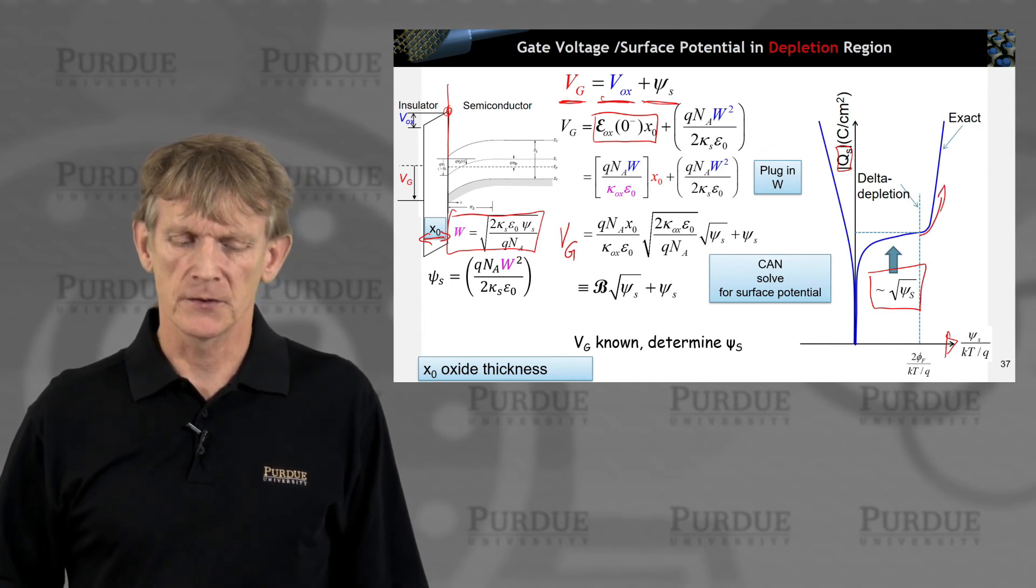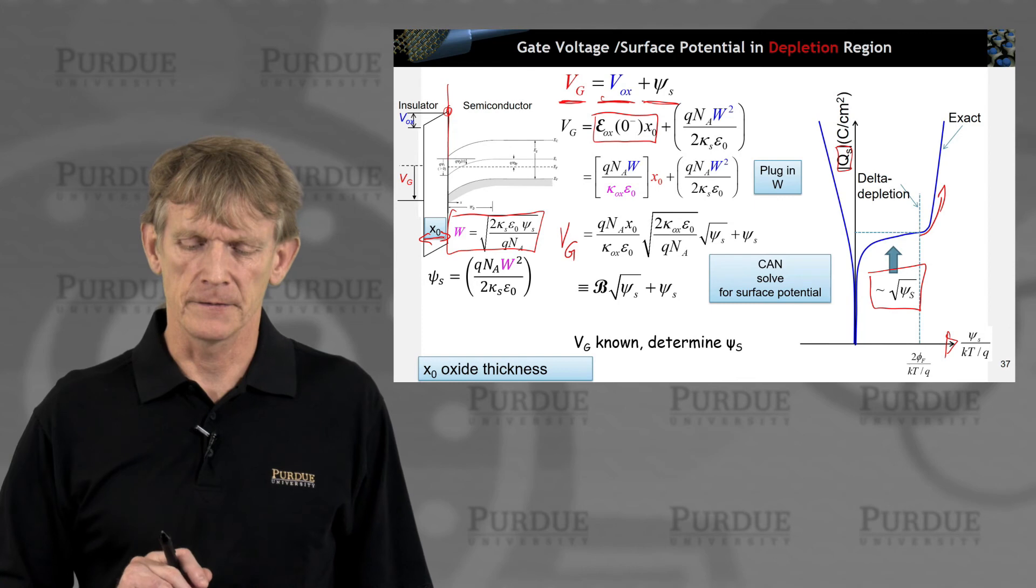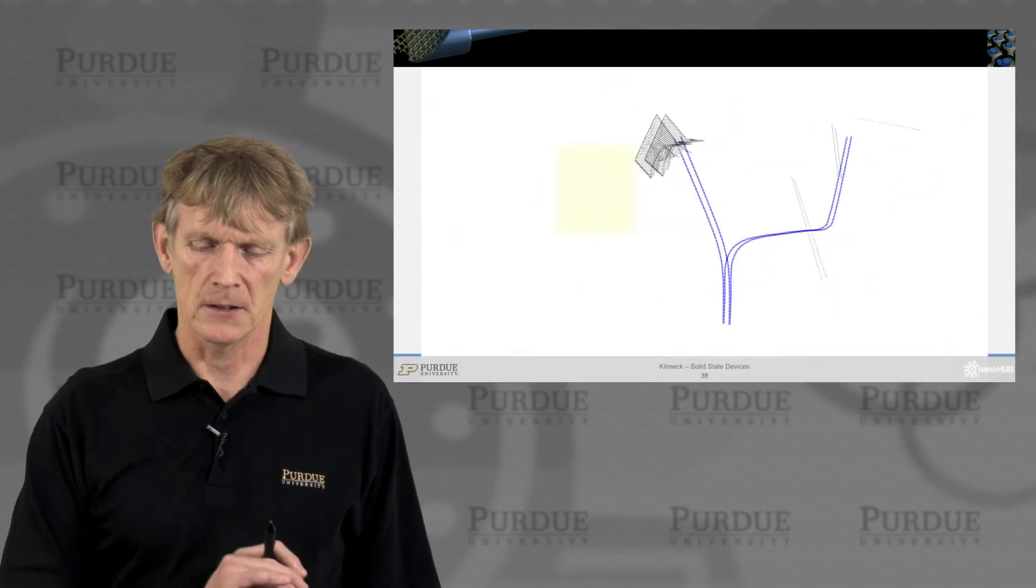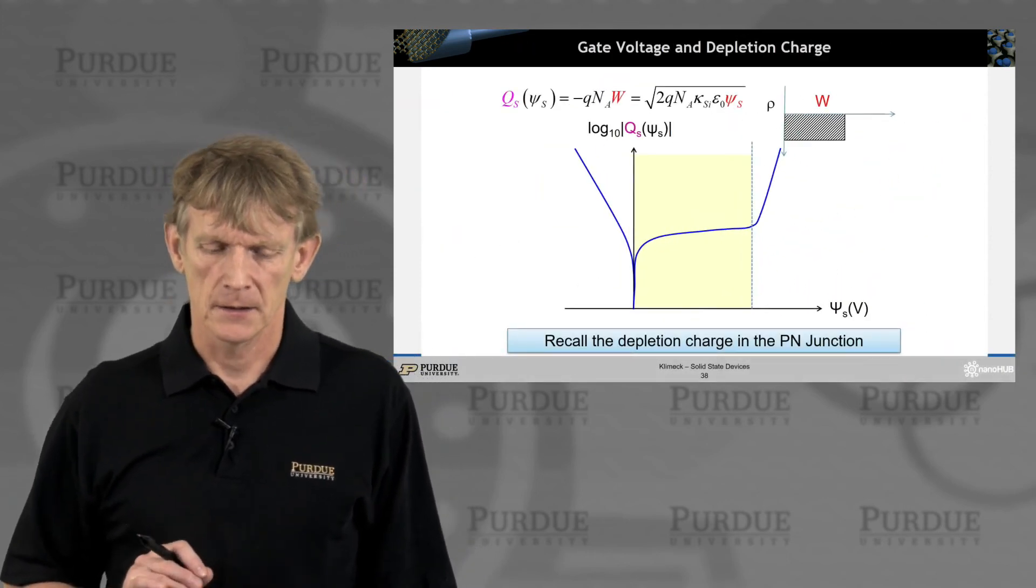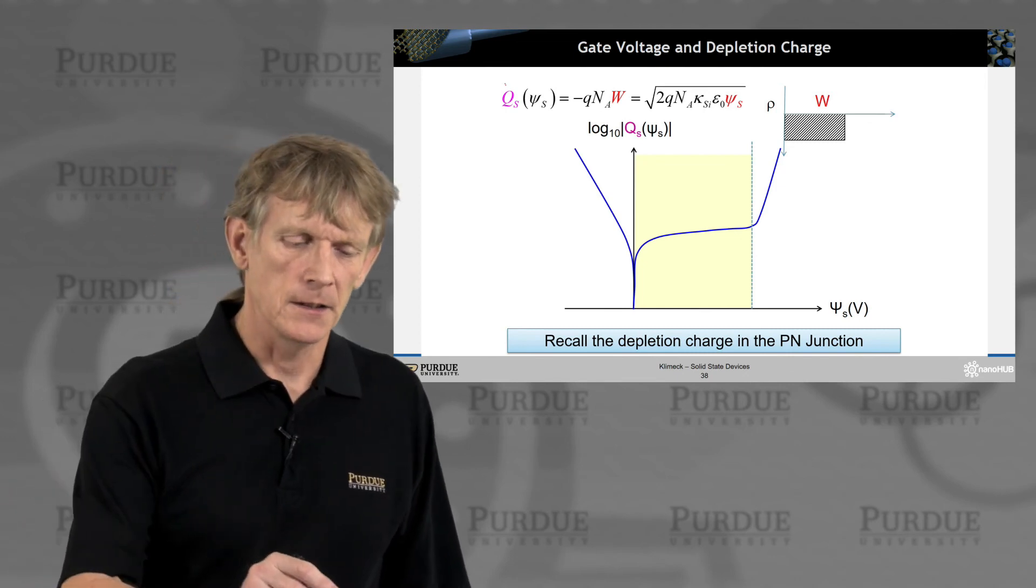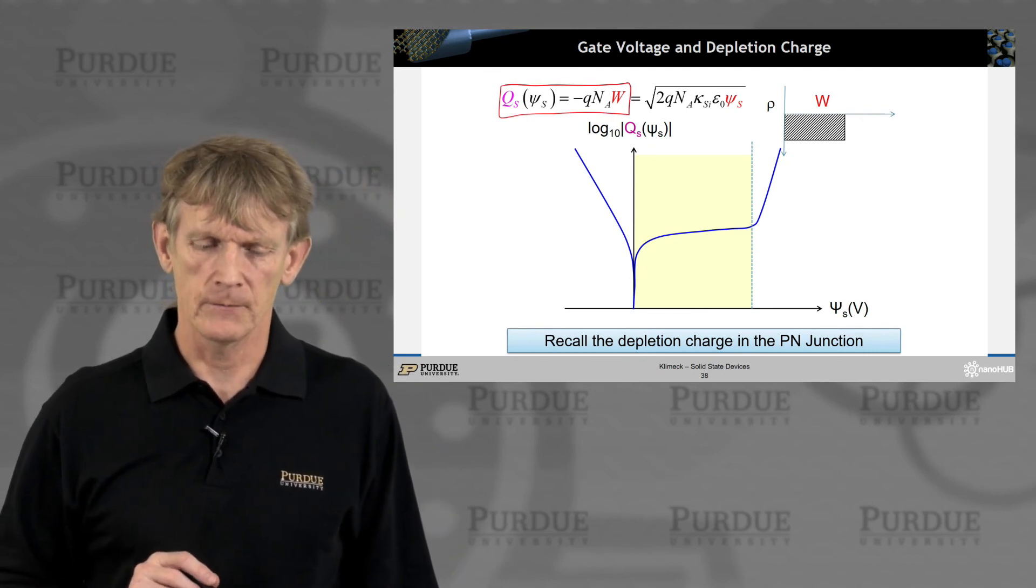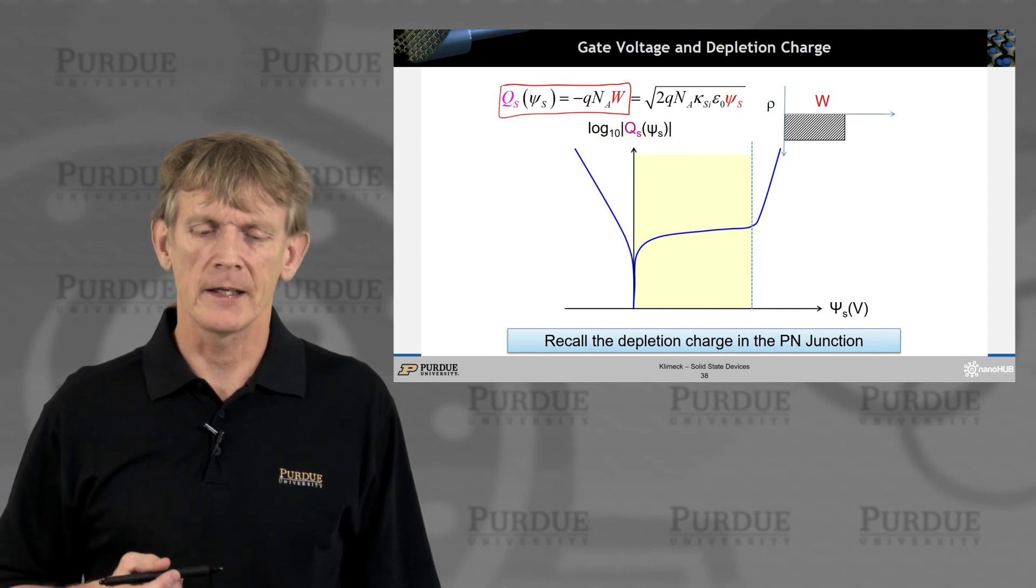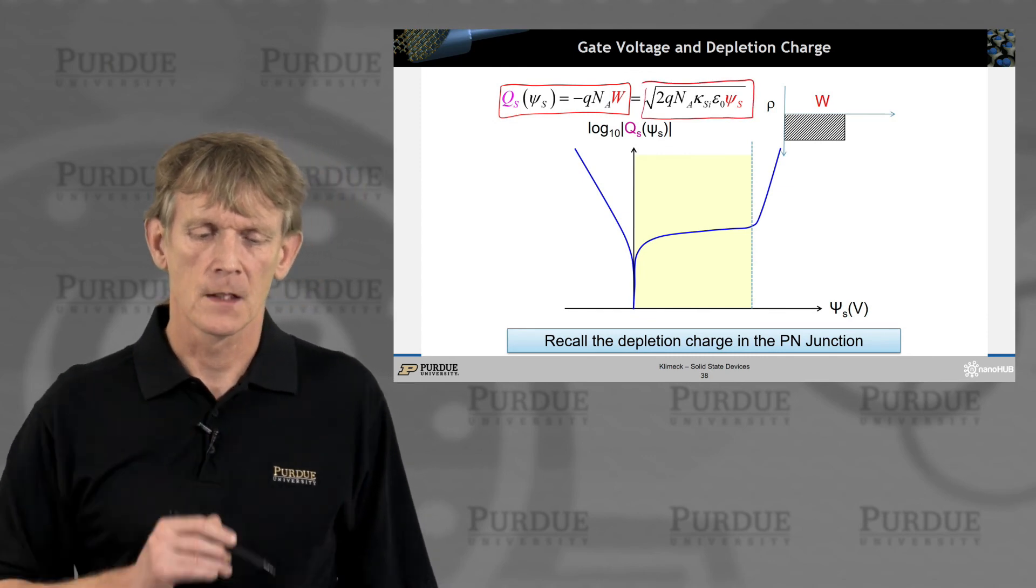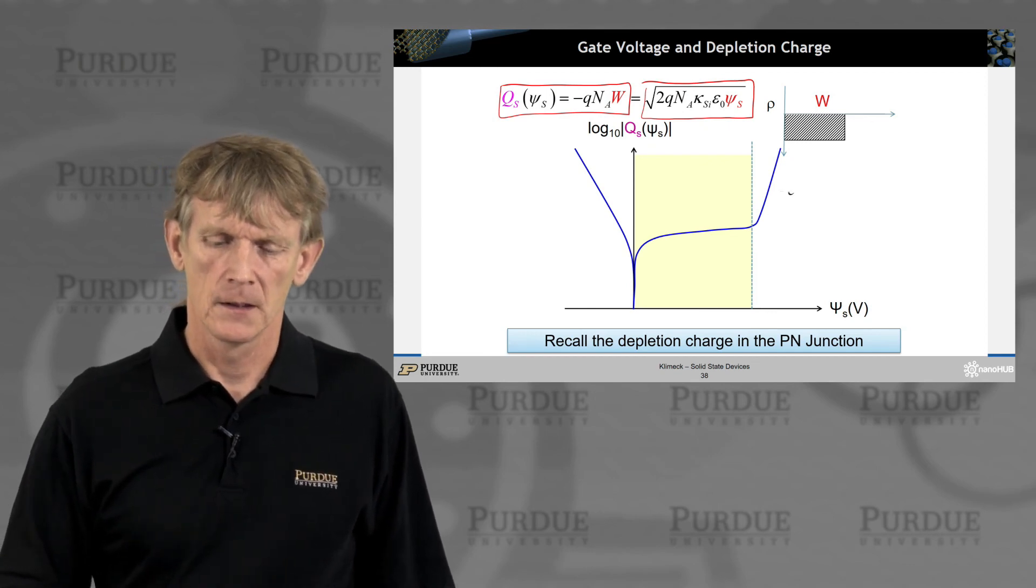So, you can solve for the surface potential given that you have doping concentration and you have oxide thickness and you can get the surface potential. So, let's go back to this expression. We had calculated before the total charge in this semiconductor if we're in depletion region. And we're now wanting to relate that to the surface potential which we have done here. So, all we did is we plugged in W from the previous slide.